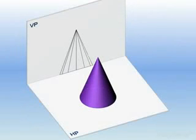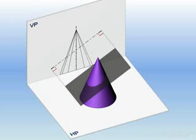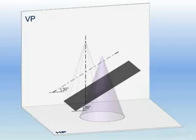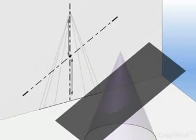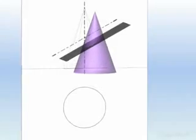In the figure, a cone rests on the HP. A section plane perpendicular to BP and inclined at 30 degrees to HP bisects the axis of the cone. Let's draw the development of the truncated cone.